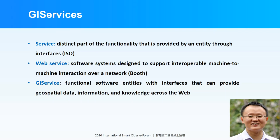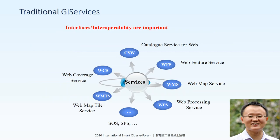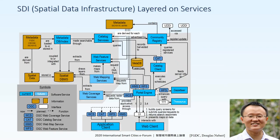Traditionally, when we talk about GIS service, the interface and the interoperability are important. For example, in OGC, we have various types of service. We all know catalog service, feature service, map service. So traditionally, when we develop a spatial data infrastructure, we use these variable services. We coordinate them through the publish, find, discover paradigm, and based on this, create the spatial data infrastructure.